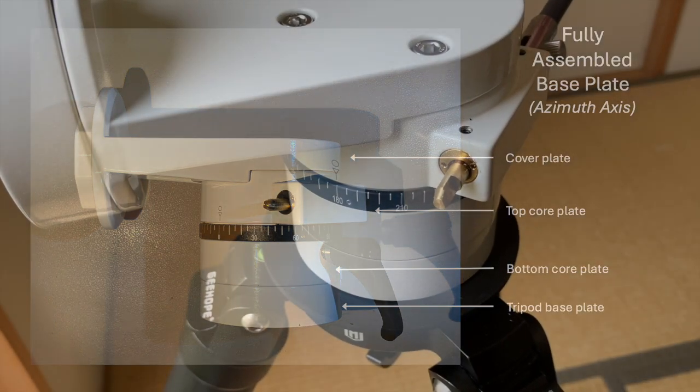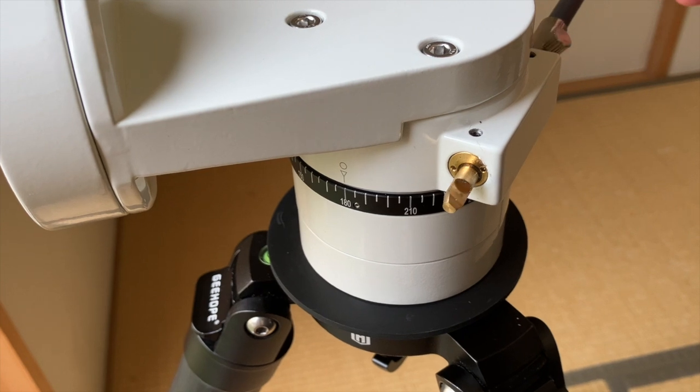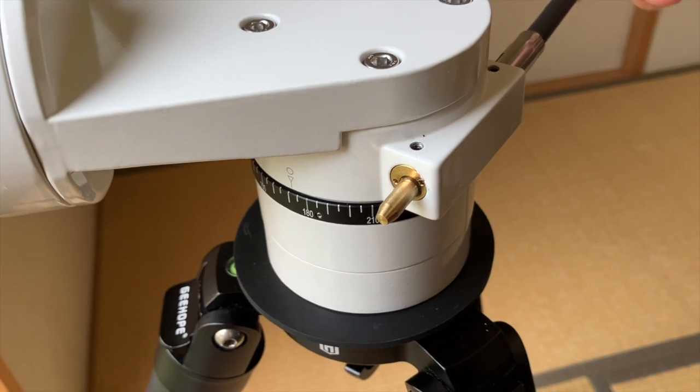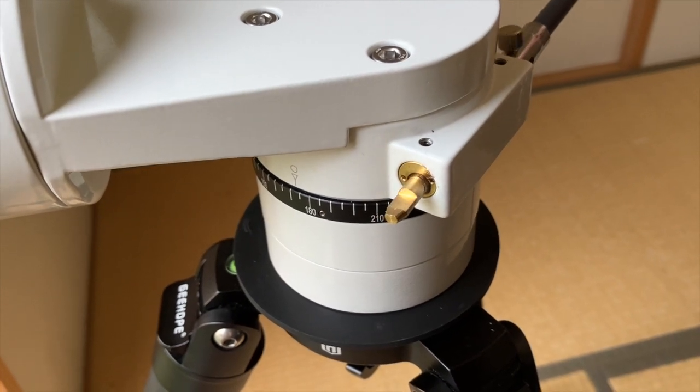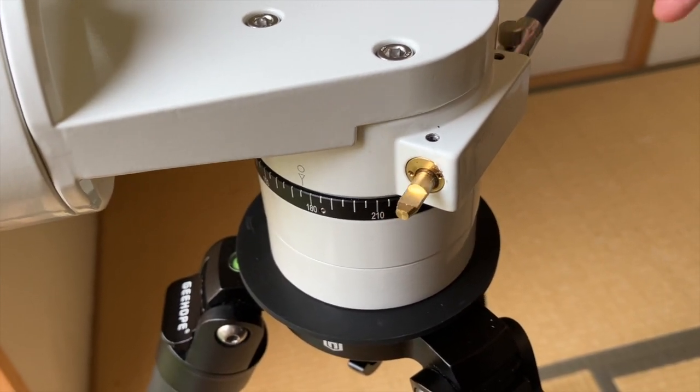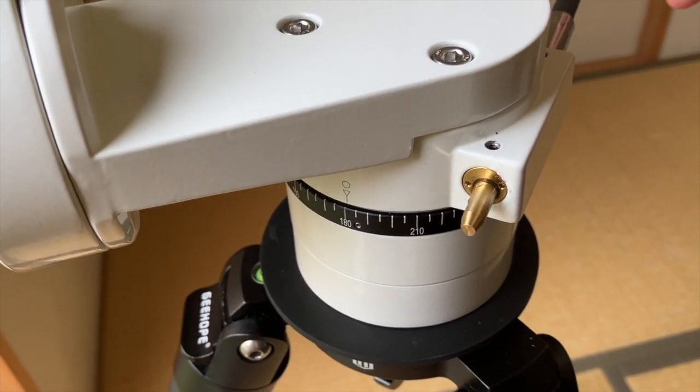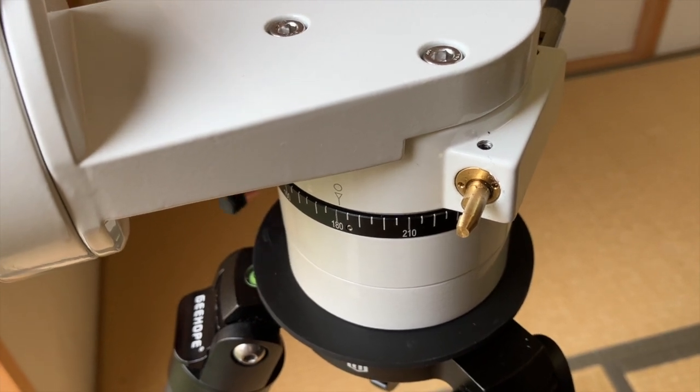When I put the unit back on the tripod and rotated the brass worm gear with the hand control rod, lo and behold, it worked. The smooth rotational movement of the azimuth axis was back. There was no backlash, and the locking mechanism worked fine also. Voila!